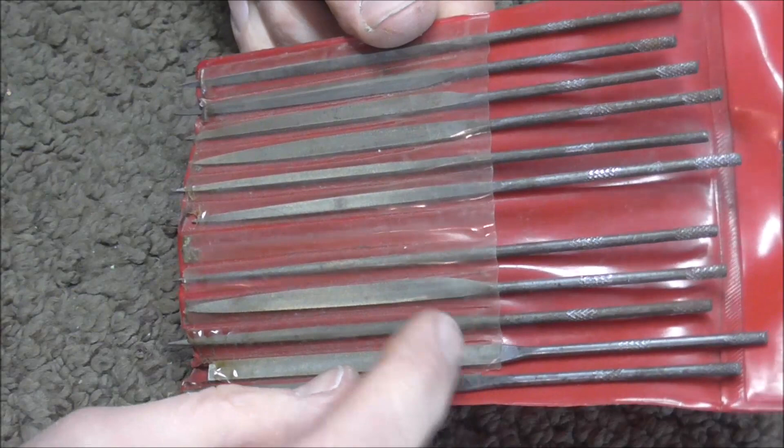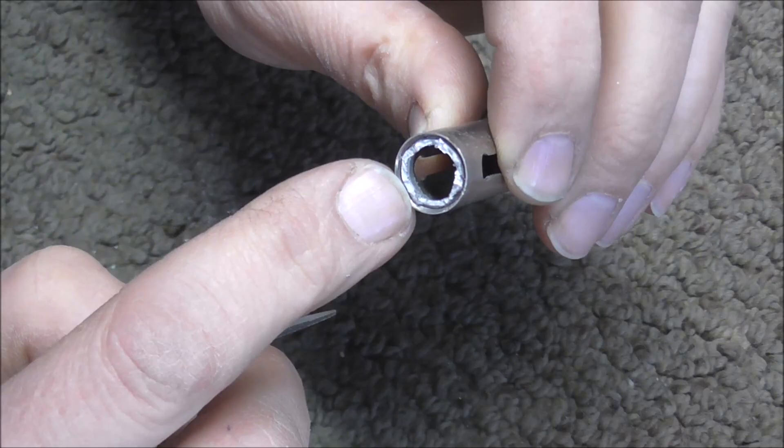I have a set of small files that are different shapes so I'm going to take the one that's triangular. I'm going to file this down from the inside and if this is very corroded it's usually easy to file.